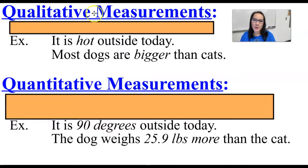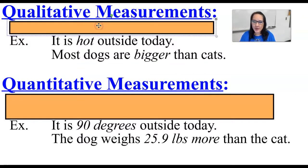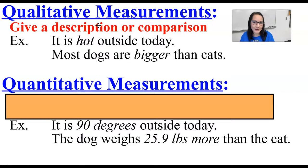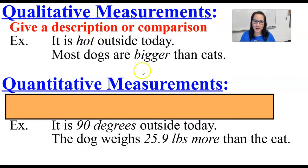There are two types of measurements. There are qualitative measurements, which are basically like a description or a comparison. For example, it's hot outside today, or most dogs are bigger than cats. So it's a descriptive observation — a qualitative measurement.